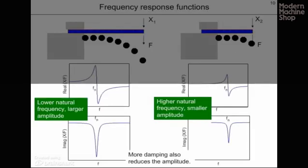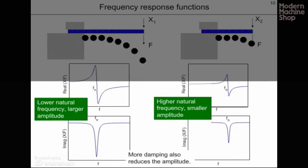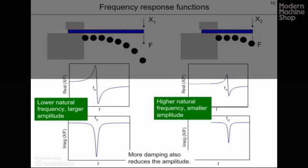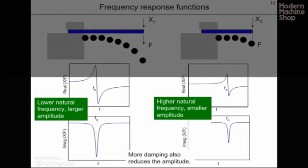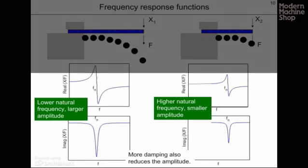Our long, flexible ruler is shown on the left. Beneath it are the real and imaginary parts of its frequency response function — where real and imaginary do not indicate existence or non-existence; they are just names for the parts of the frequency response function. On the right, we see the shorter, stiffer ruler with its frequency response function shown below it. The difference between these two is that the shorter ruler has a higher natural frequency and a smaller amplitude because it is stiffer. More damping would also reduce the amplitude, and multiple natural frequencies will give multiple peaks.